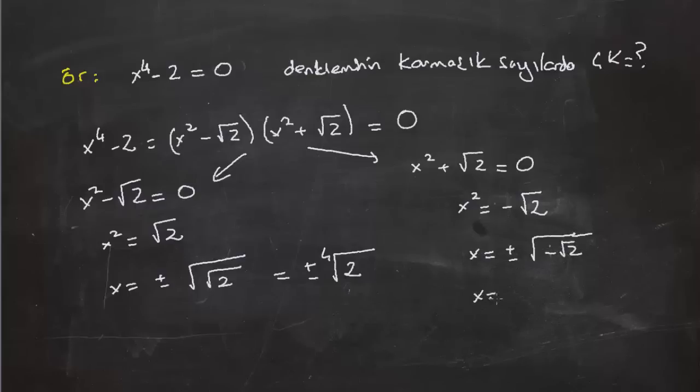Şimdi burada biraz karmaşık sayılar bilgimi kullanmam gerekiyor. Bu ifadeyi ben √2·(-1) diye yazarsam ve ayırırsam: √√2 · √-1.